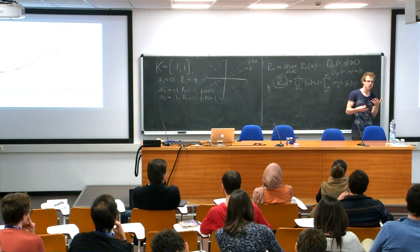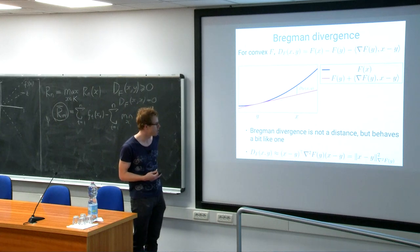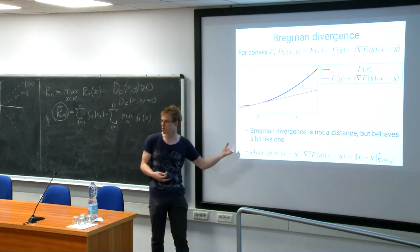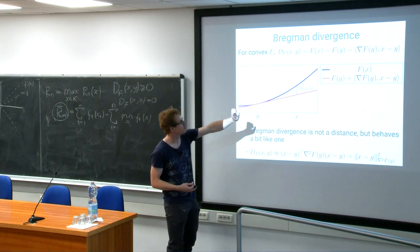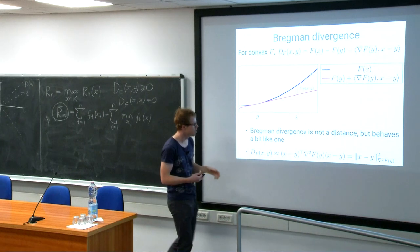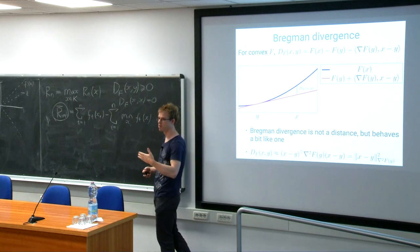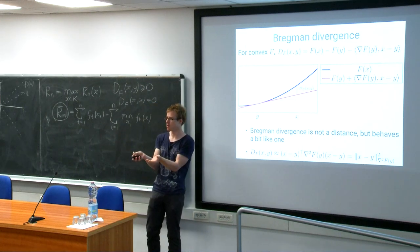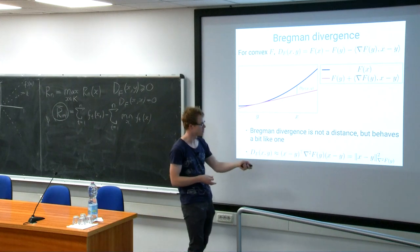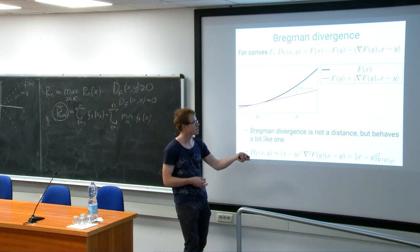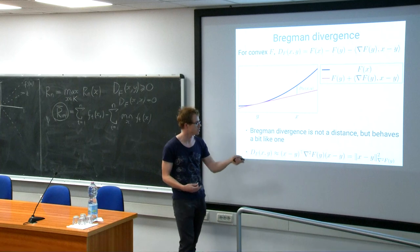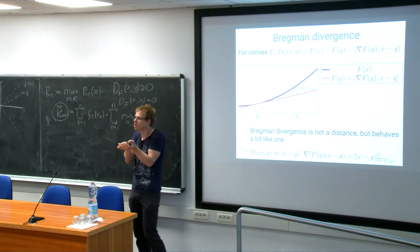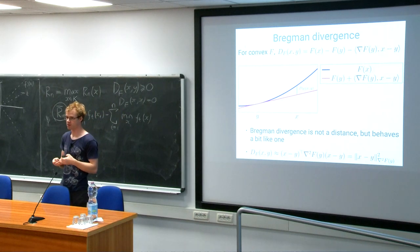Locally, the Bregman divergence looks like a weighted norm: by a second-order Taylor approximation around y, D_f(x, y) ≈ ½(x-y)^T ∇²f(y) (x-y), the Hessian-weighted squared distance. Since f is convex, the Hessian is positive definite, so this is a proper norm locally. How curved the function is determines how large the divergence is; for a linear function, the Bregman divergence is zero.